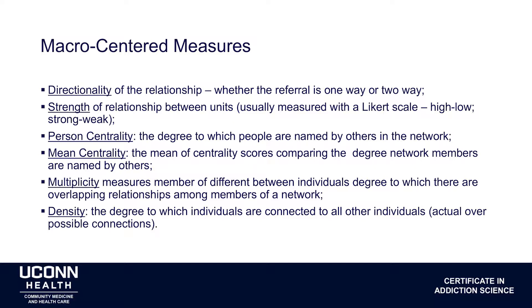Mean centrality is the mean of all the centrality scores of all members in the network. Since different networks differ in their structure, you would see different means — for example, in senior housing network data, different buildings will have different means in terms of how central people are. Multiplicity considers the number of different relationships between individuals in the network. Density is a measure of the degree to which people are connected to all other individuals — actual over all possible connections.